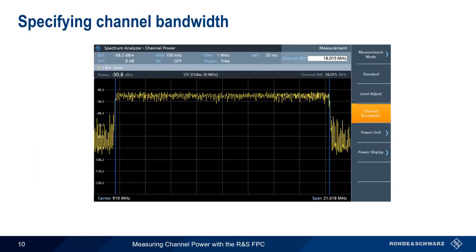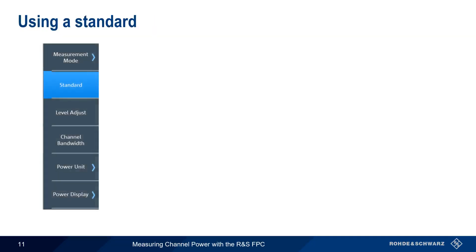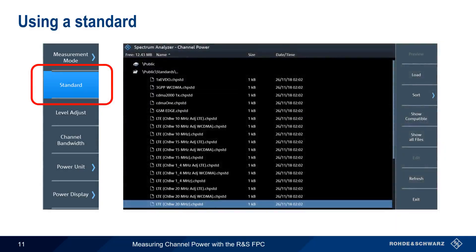In order to measure channel power, we need to specify the width of the channel. This can be done in two ways. The first is by manually entering the channel bandwidth. Another way to specify channel width is using a standard. Recall that channel power is frequently used for measuring wireless communication signals, and the standards for these technologies define nominal channel widths. After clicking on Standard, we can choose from a wide variety of predefined channels. Just select the Technology Type and Channel Width, if applicable, and then click Load. The analyzer will then automatically configure the proper channel bandwidth.